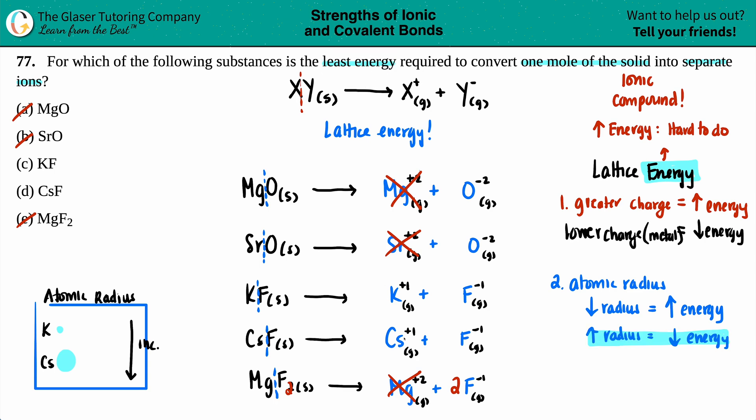Potassium is smaller. The smaller the radius, the higher the energy. The bigger the radius, the lower the energy. We wanted the least, so you got it - it's cesium fluoride, CsF.